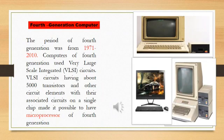1971 to 2010 was the period of the fourth generation computers. The fourth generation computers used microprocessors. A microprocessor consists of a small silicon chip on which thousands of circuits are placed. The fourth generation computers are smaller, portable and cheaper. They use less electricity and produce less heat.